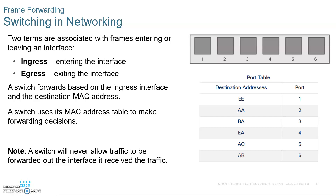Step number one: MAC address EE wants to send data to PC2. PC1 encapsulates a packet into a frame. It's going to have the source MAC address EE and the destination MAC address AC on the frame. Number two, PC1 is going to send the frame to port 1. Now, the switch is going to learn that MAC address EE is located on port 1 because of the ingress frame — the incoming frame — which has MAC address EE. It places MAC address EE with FastEthernet 0/1 in the MAC address table.